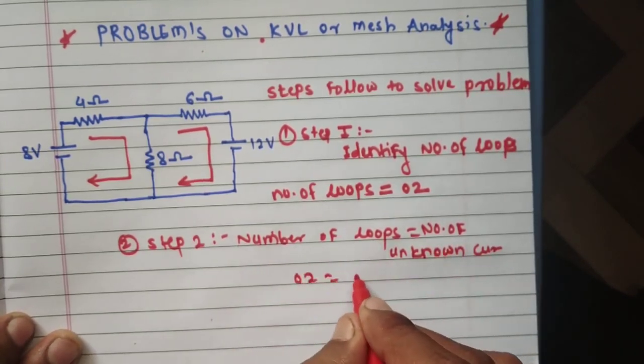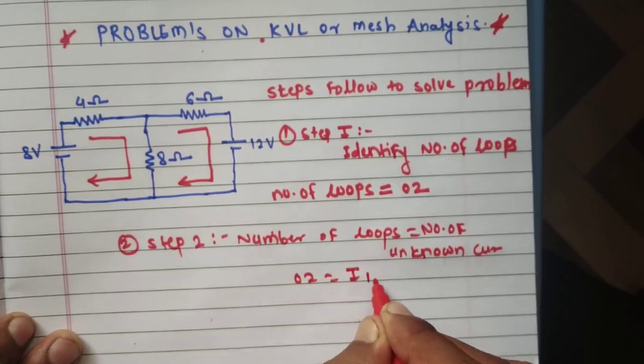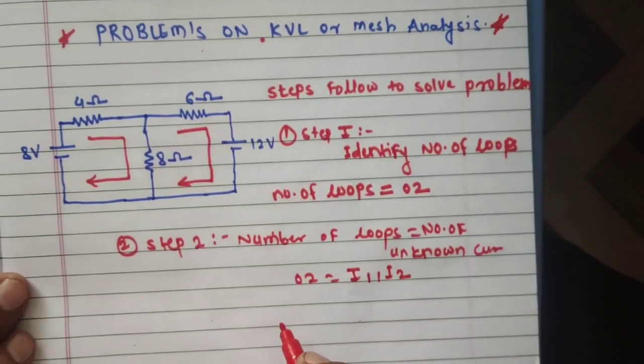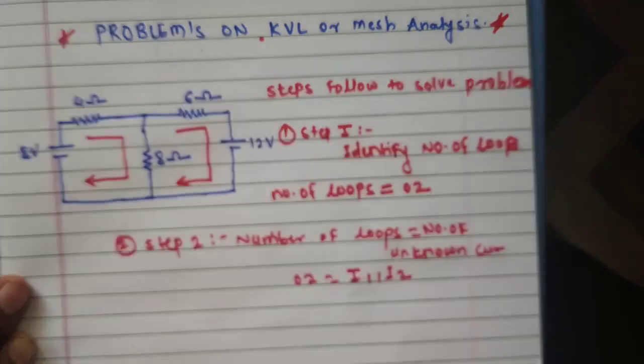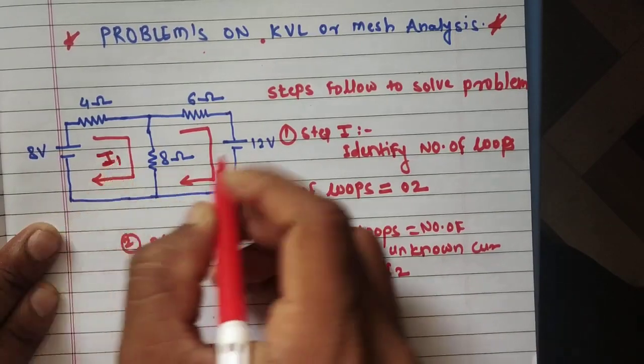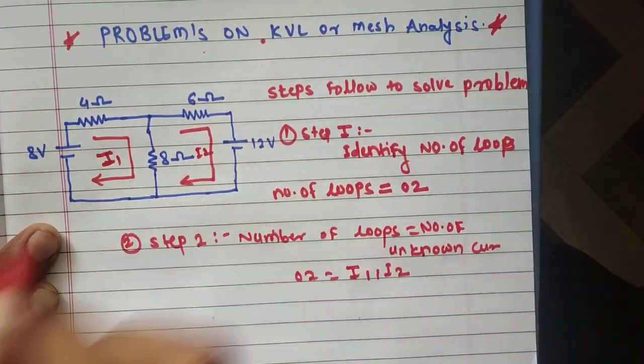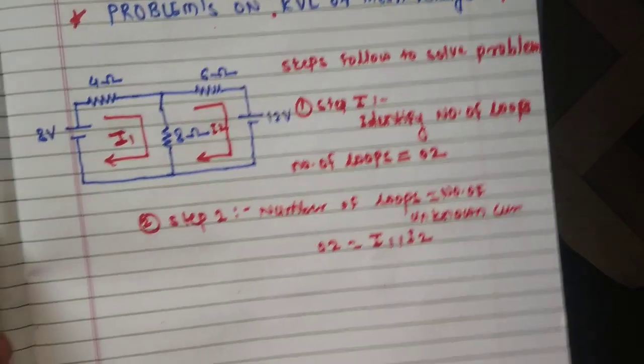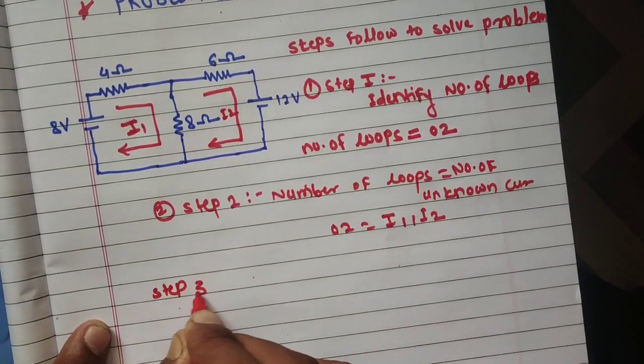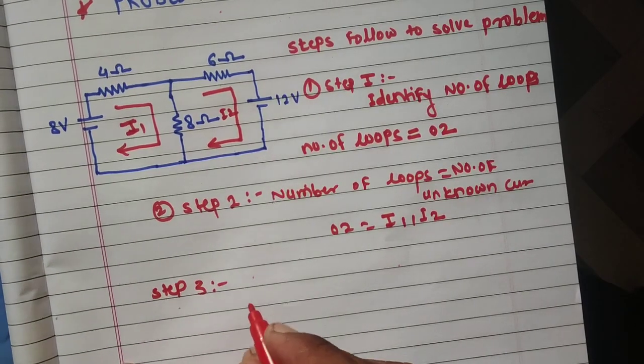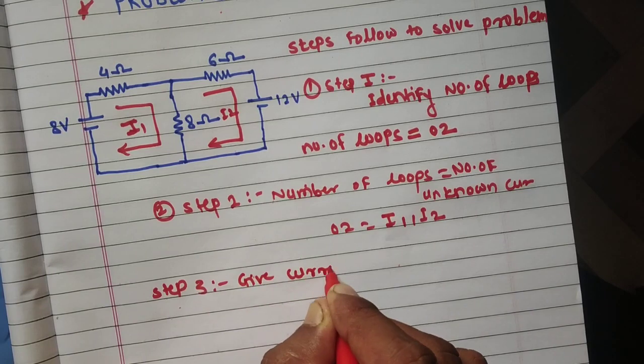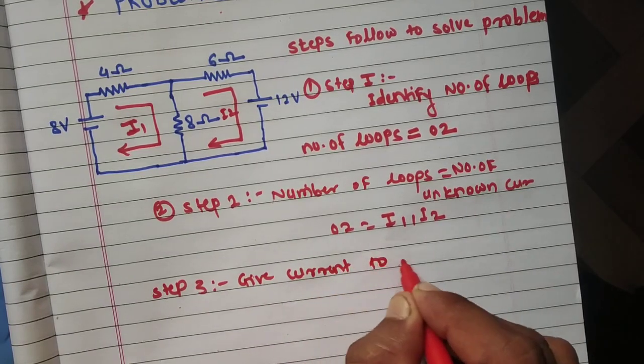Number of loops is two, so number of unknown currents is two. So each loop has its current. Loop one has current i1 and loop two has current i2.